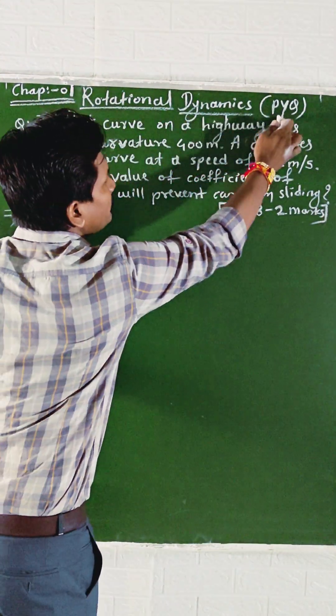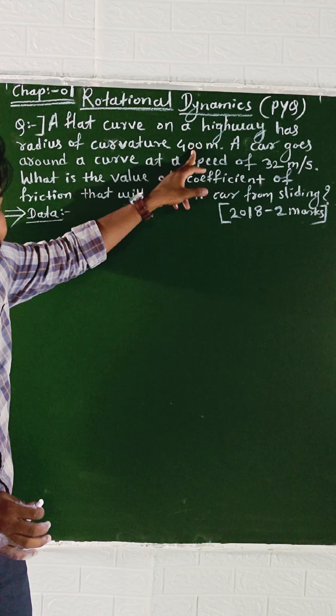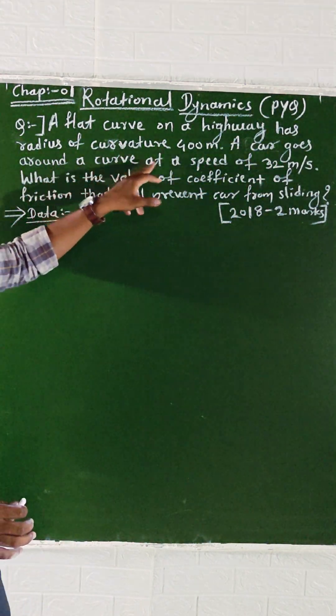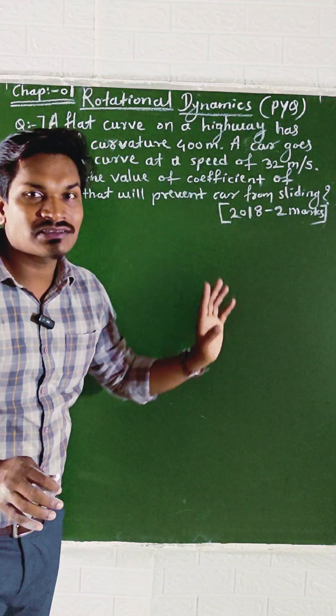Chapter Number 1, Rotational Dynamics PYQ. A flat curve on a highway has a radius of curvature of 400 meters. A car goes around the curve at a speed of 32 meters per second. What is the value of the coefficient of friction that will prevent the car from sliding?